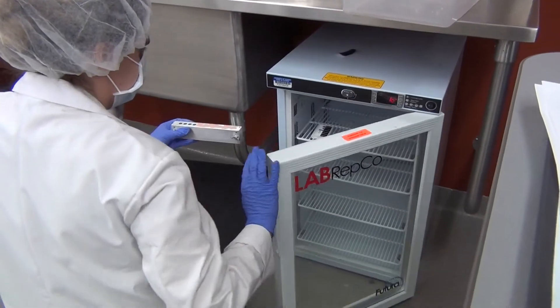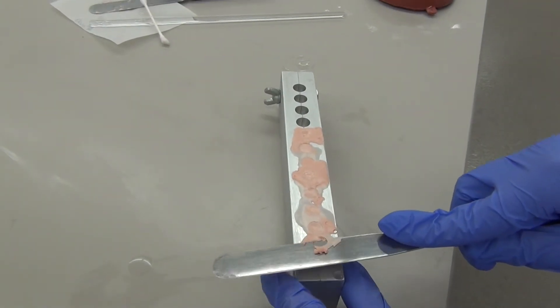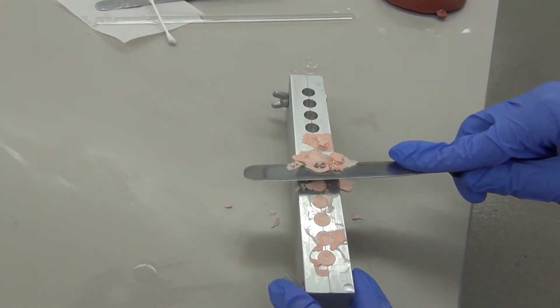Place the suppositories into the refrigerator. Once the suppositories have hardened, you can remove the mold from the refrigerator and scrape off the excess from the top.